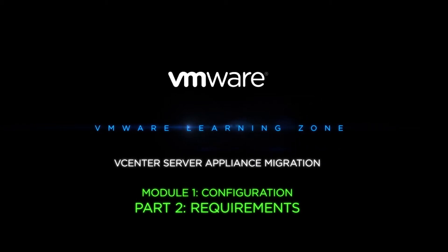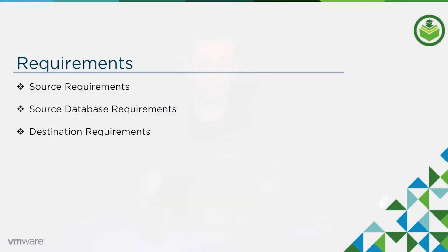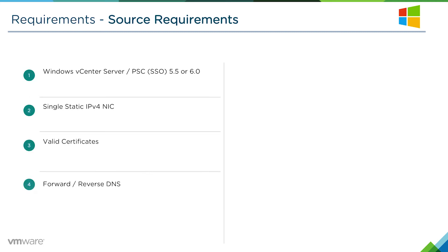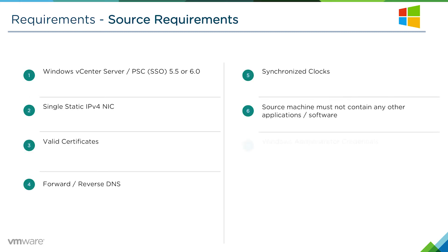In this video we're going to talk about the requirements for both the source Windows vCenter server, some database requirements, and the destination requirements to complete a successful migration. Let's take a look at the source requirements first. We support migrating a Windows vCenter server or SSO/PSE 5.5 or 6.0 to a vCenter server appliance 6.5.